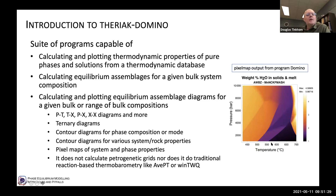The main program Theriac will let you calculate an equilibrium assemblage for a fixed bulk system composition or a range of bulk compositions. Most people want to use Theriak-Domino to actually build diagrams. The type of diagrams it builds are called equilibrium assemblage diagrams, and it can calculate these for a fixed bulk composition or a range of bulk compositions — including P-T diagrams, which in the ThermoCalc world you would call pseudo sections — and also temperature-composition diagrams with a temperature axis, pressure axis, and a compositional variable.